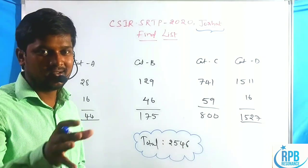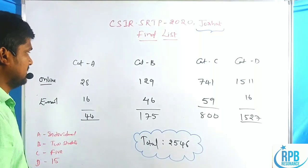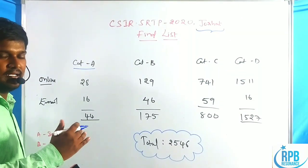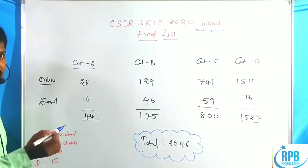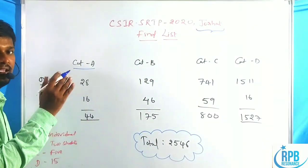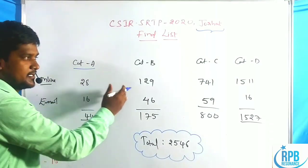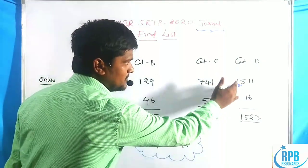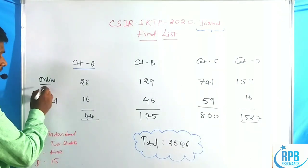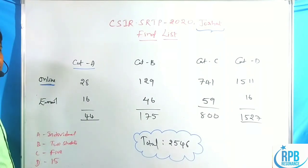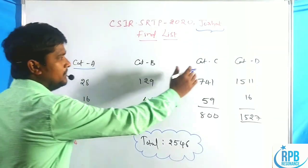Some candidates are selected in particular areas. I will now give complete details on the CSIR SRTP 2020 Jorhat final list of candidates, based on their category — whether it is a single-member individual project, two-member project, five-member project, or 15-member large community project. Through the online applicants, students are divided into four categories: A, B, C, and D.